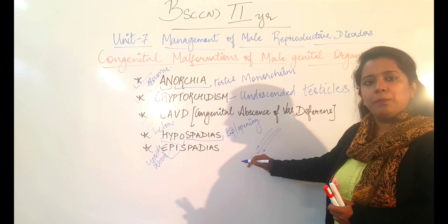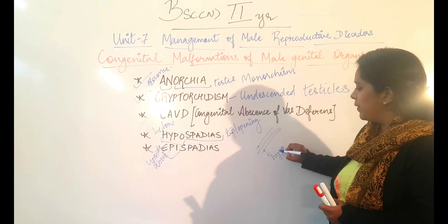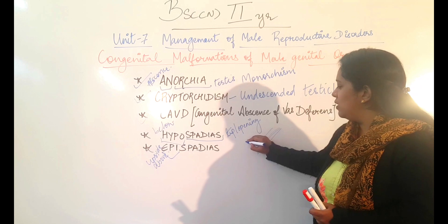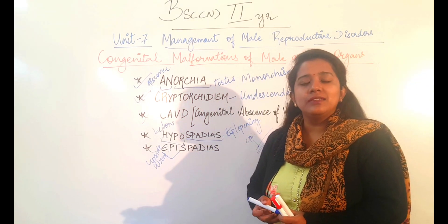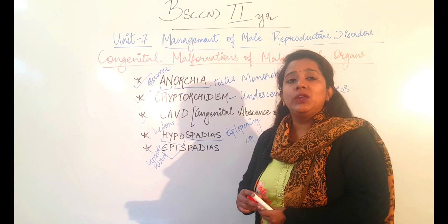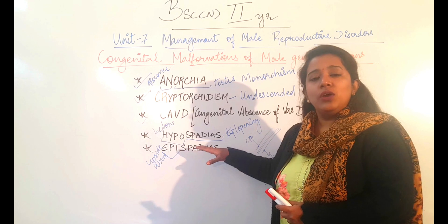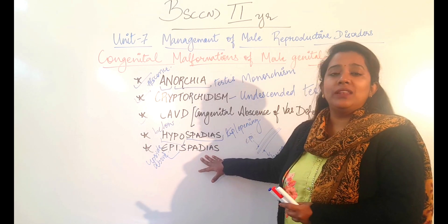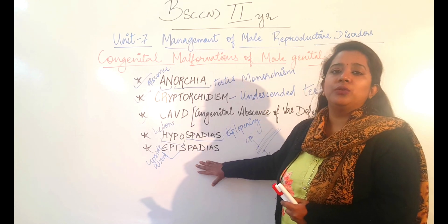If the urethral opening is below the tip, then that condition is called hypospadias. If it goes upwards, then that disordered condition is called epispadias. So to define: hypospadias is a congenital defect when the opening of the urethra is situated below the tip of the urethra, and epispadias is a congenital defect when the opening of the urethra is situated above the urethral tip.